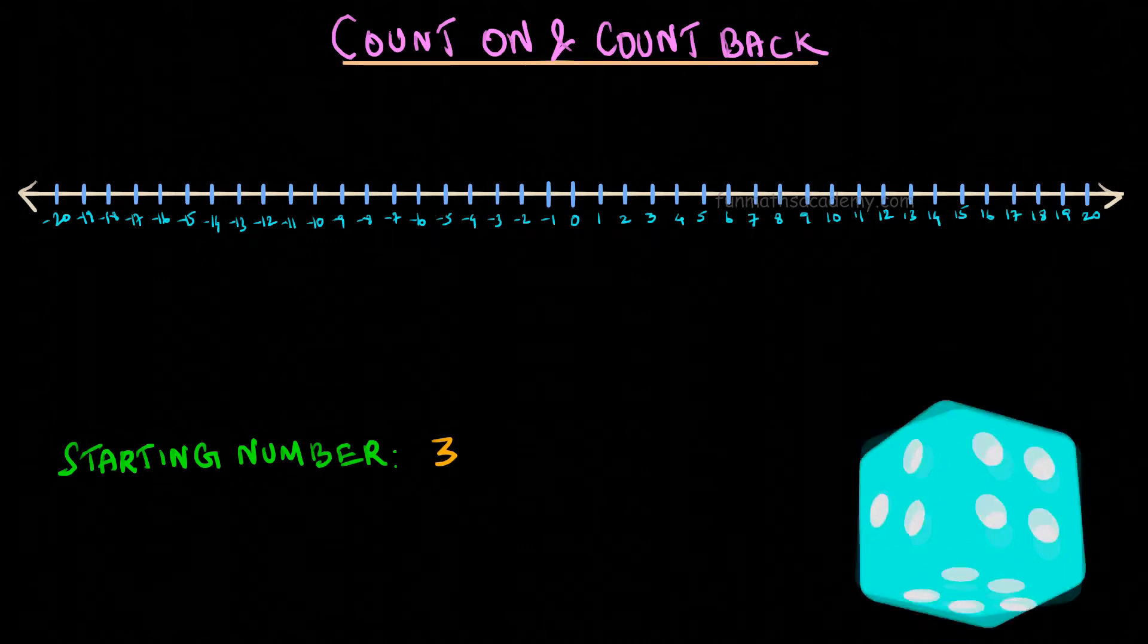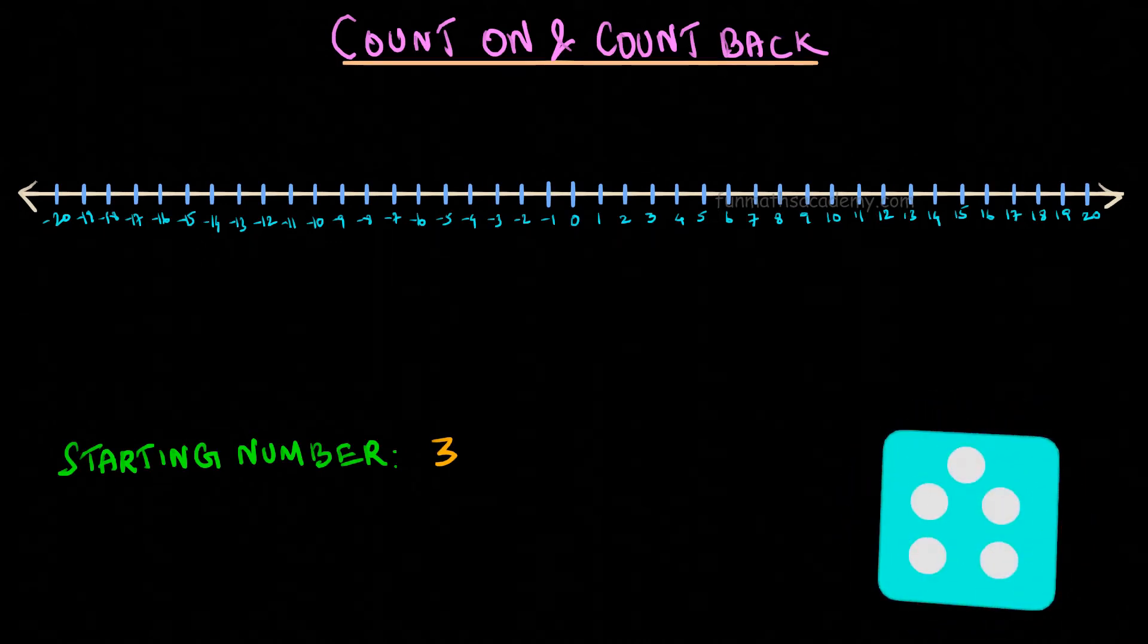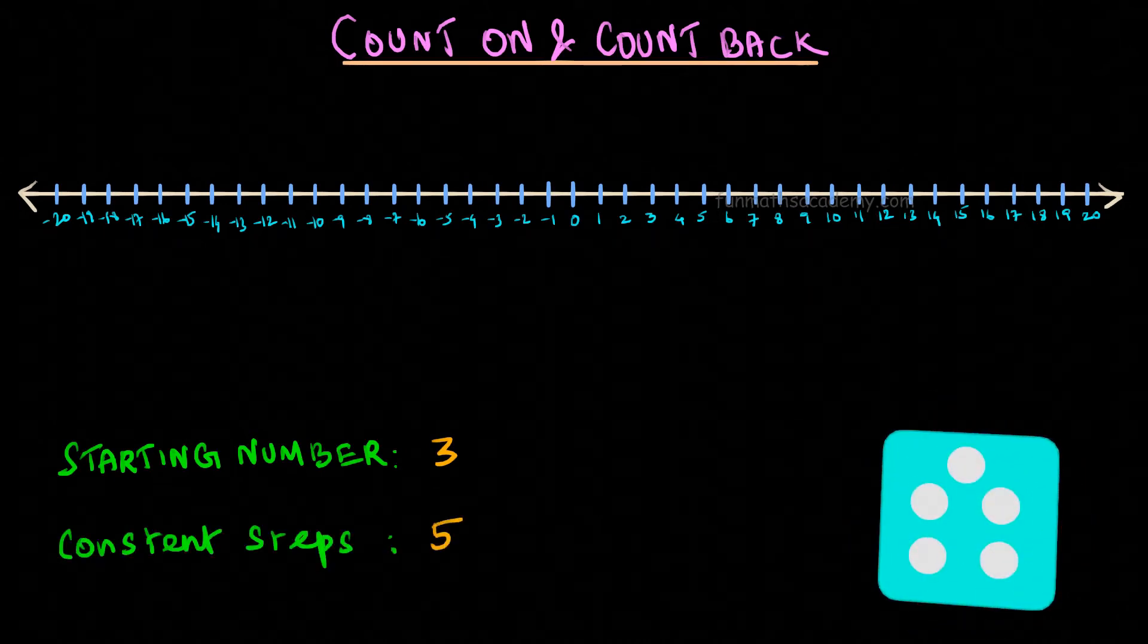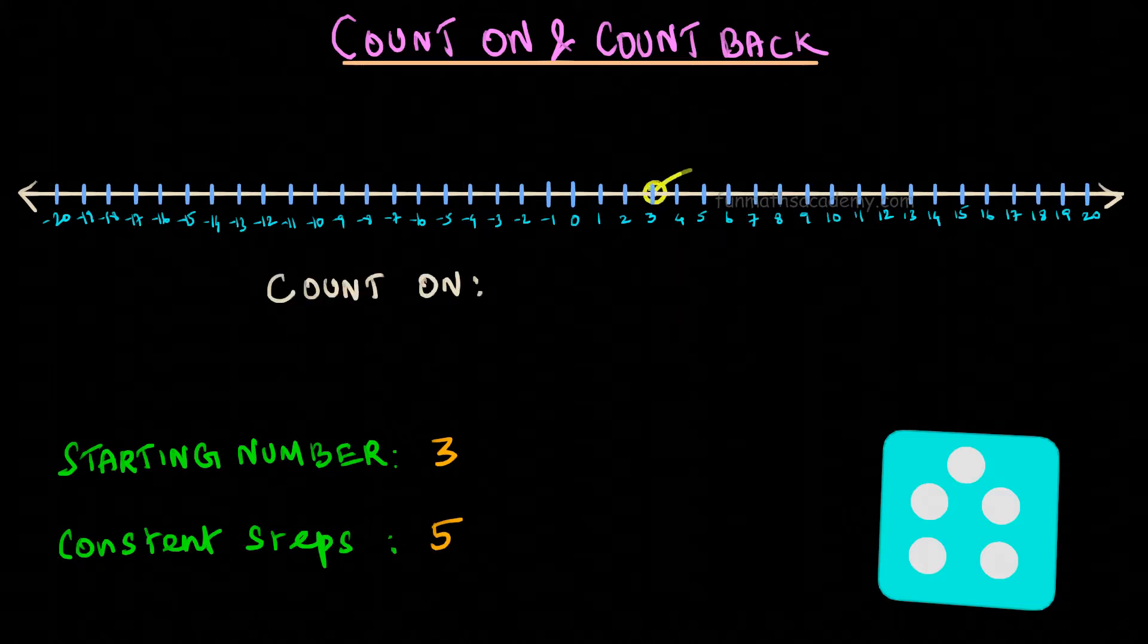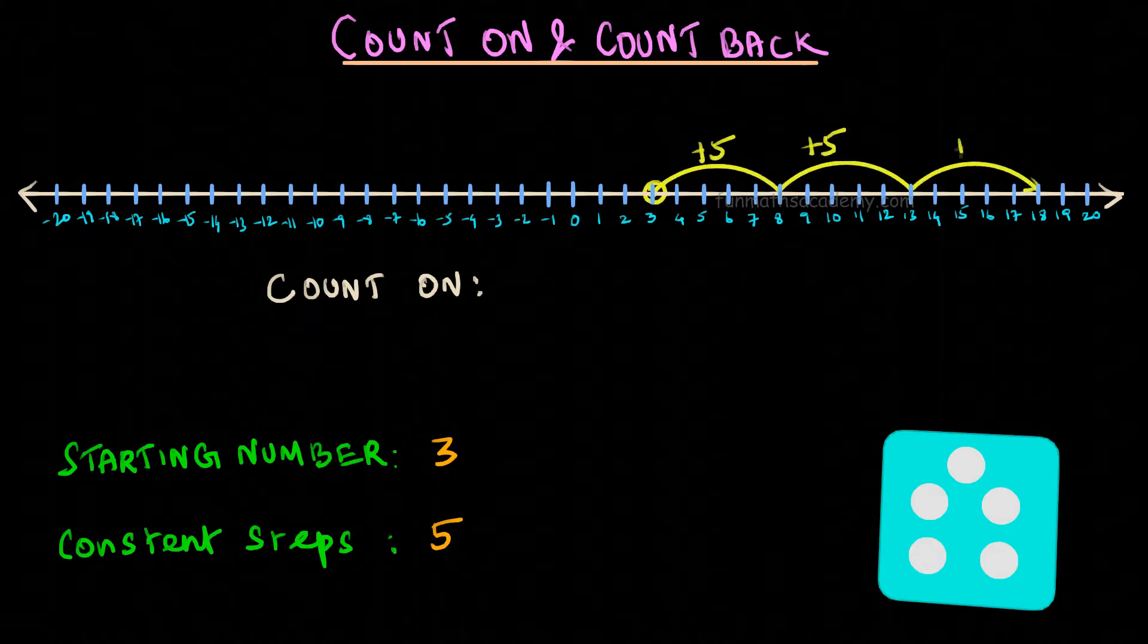I am going to choose another one-digit number at random. This time, I choose the number 5 and this 5 will be constant steps or jumps. To count on from the starting number 3, we are going to jump 5-5 numbers and list them.